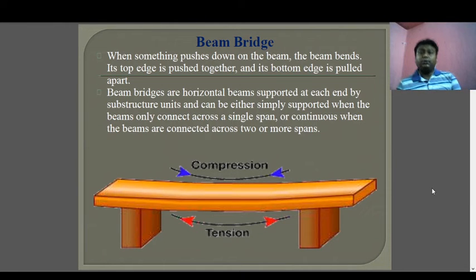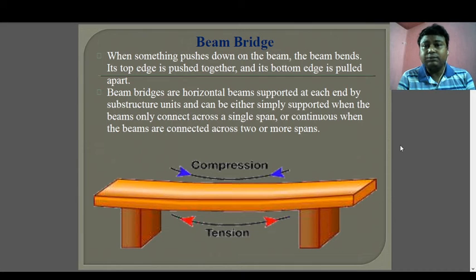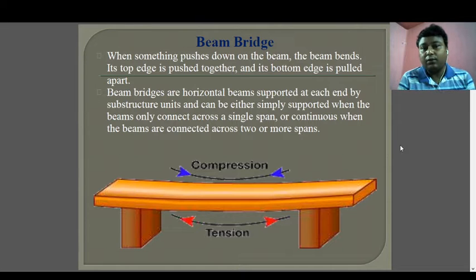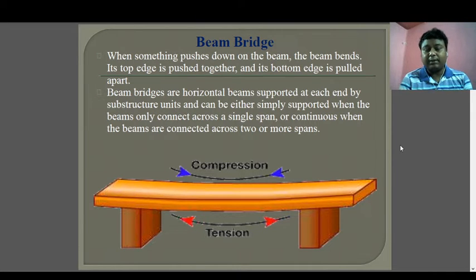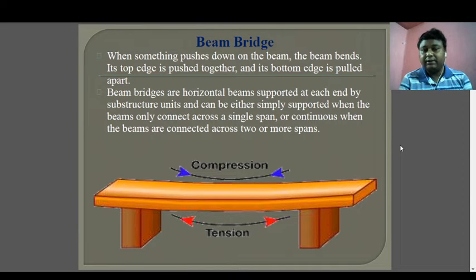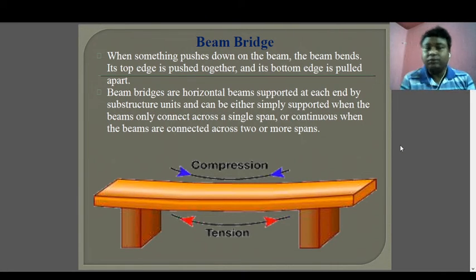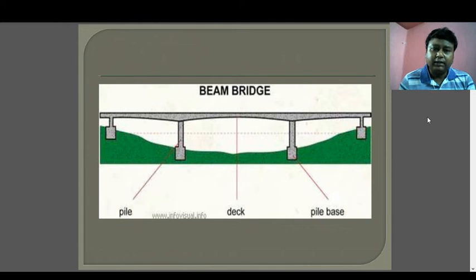A beam bridge: when something is pushed down on a beam, the beam bends — its top edge is pushed together (compression) and its bottom edge is pulled apart (tension). Beam bridges are horizontally supported at each end by substructure units and can be simply supported when beams are connected across a single span. There are different types of span patterns: simple span, continuous span, and segmented span. The concept of compression at the top and tension at the bottom is the basic concept of beam bridges.